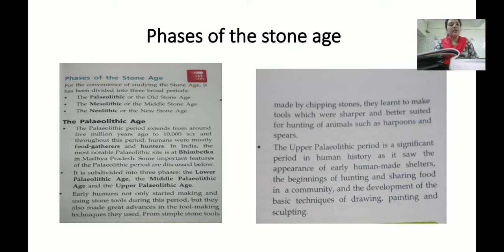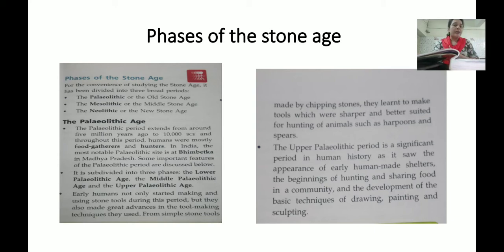First, let's talk about the Paleolithic Age. The Paleolithic Age extends from about 5 million years ago to 10,000 BCE. In the first chapter I mentioned that in BC, the year count always goes up. So from 5 million years ago to 10,000 BCE is called the Paleolithic Age.